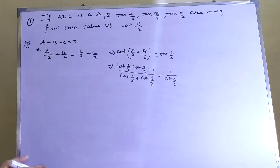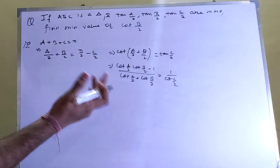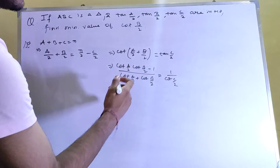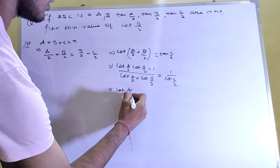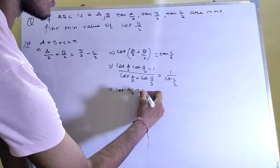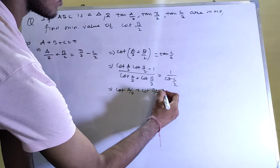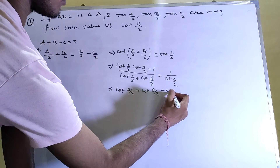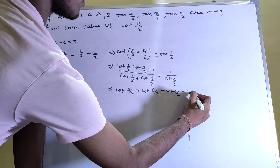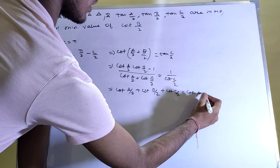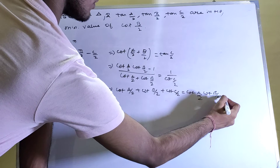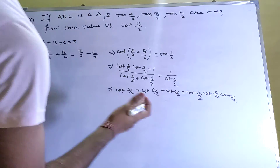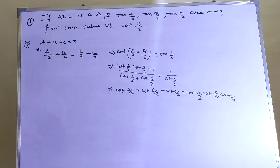After cross multiplication, we get the identity: cot(A/2) + cot(B/2) + cot(C/2) = cot(A/2)·cot(B/2)·cot(C/2). It is given that tan(A/2), tan(B/2), and tan(C/2) are in HP.